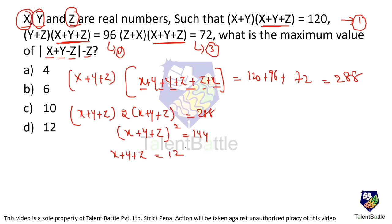Therefore x+y+z = ±12, since x, y, z are real numbers both positive and negative values are possible. We first find x, y, z using x+y+z = 12, then revisit with x+y+z = -12.